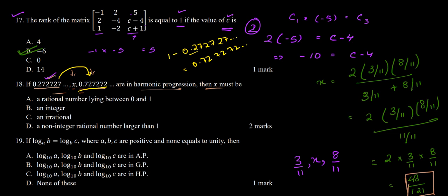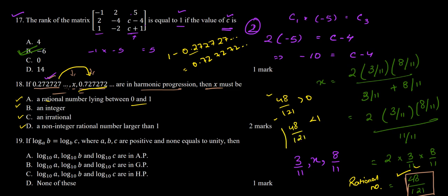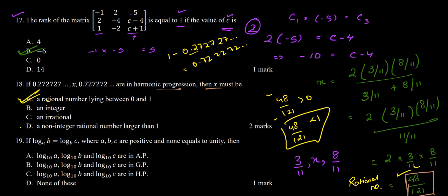So our answer is 48/121. Checking the options, we see no explicit number is given, but the options describe the character of x. Since 48/121 is a rational number, and 48 is less than 121 so it lies between 0 and 1, option A — a rational number lying between 0 and 1 — is the correct answer to question 18.